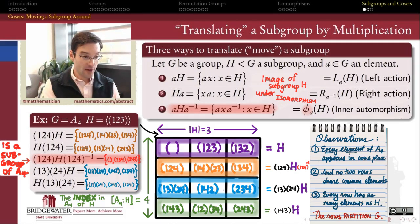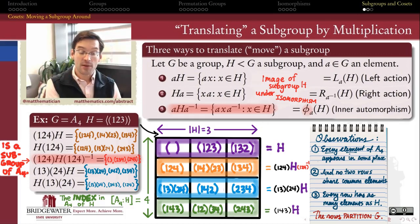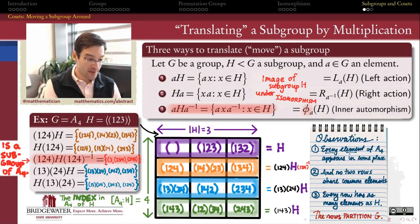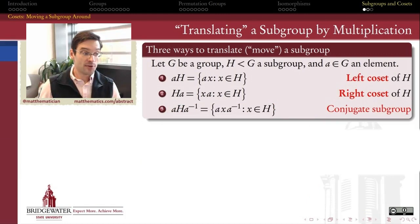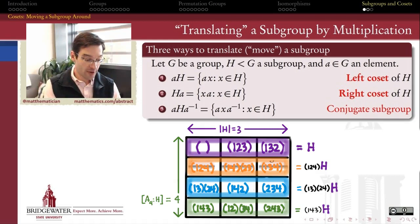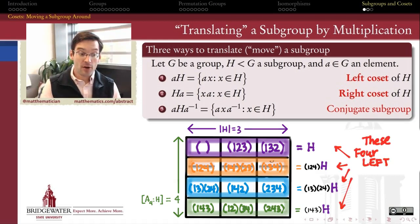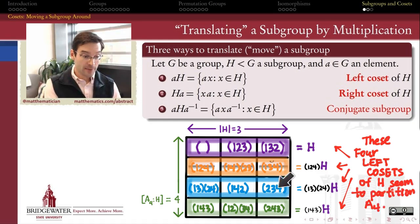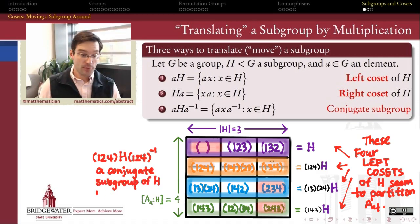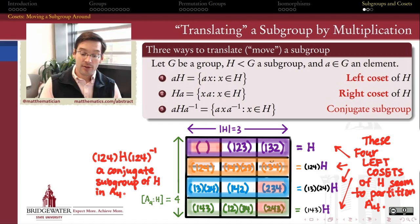This conjugation action — the action of an inner automorphism induced by an element — always carries a subgroup onto a subgroup. It might be the same subgroup or a different one, but it will always be a subgroup, in ways that cosets cannot generally be. So in this video we've looked at three different ways of moving a subgroup around inside its parent group. Left or right actions probably move it to something no longer a subgroup, but combining both actions via an inner automorphism gives a conjugate subgroup. These observations — that left cosets partition G into equal-sized pieces, and that conjugate subgroups remain subgroups — are key on our road to proving Lagrange's theorem. In the next video, let's prove these claims in the general case of any finite group.